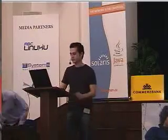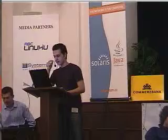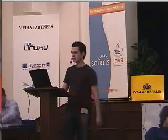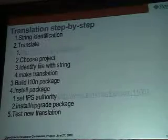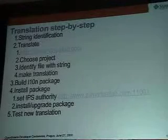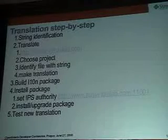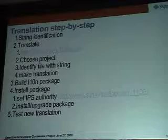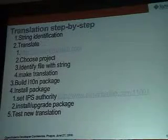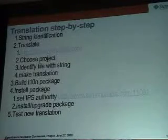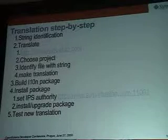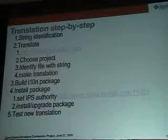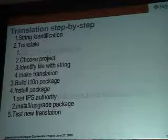Thank you for the introduction. My name is Robert Malovets and I'm from Solaris Globalization also. Right now I will show you how our proposal works in practice. The translation of OpenSolaris as we are proposing is done in a couple of steps: first, we choose a string to localize; then we go to our community translation tool, choose a project, identify the string and the file, make the translation; after that, we initialize the building process which will automatically create a package with the translation; the package is published to the IPS repository automatically; and then we install or upgrade this package with the new translation.